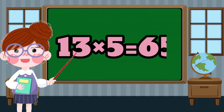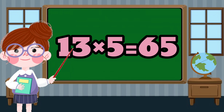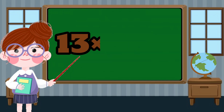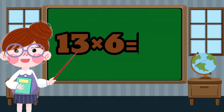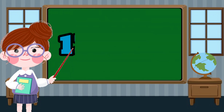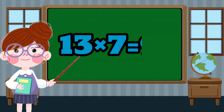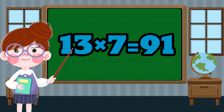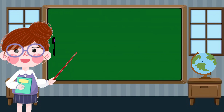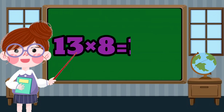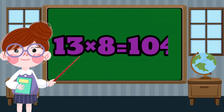13 x 5 equals 65. 13 x 6 equals 78. 13 x 7 equals 91. 13 x 8 equals 104.